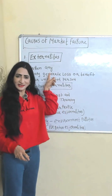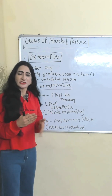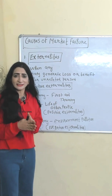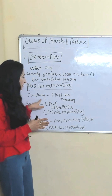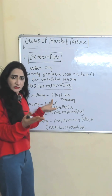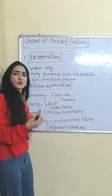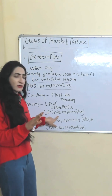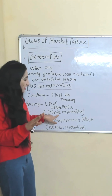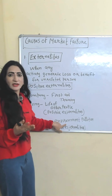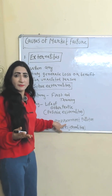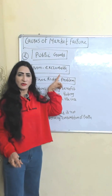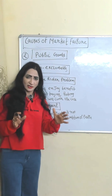Externalities occur when any activity generates a loss or benefit for unrelated persons. For example, your company giving first aid training to you, through which you save lives of people who are not employees of your company — this is called positive externalities. But if your company's product causes environmental pollution and people are suffering because of it, that is called negative externalities.